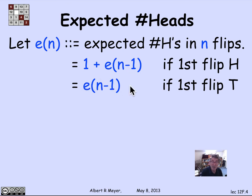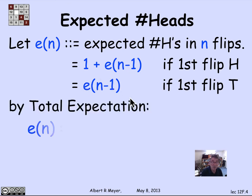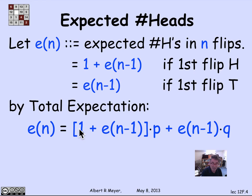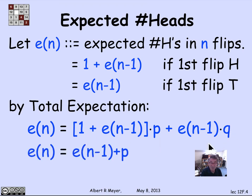These are two cases where I can apply total expectation. By total expectation, the expected number in n flips is 1 plus e of n minus 1 times the probability of a head, plus e of n minus 1 times the probability of a tail. Multiplying through by p and q, and remembering that p plus q equals 1, this simplifies to e of n minus 1 plus p.